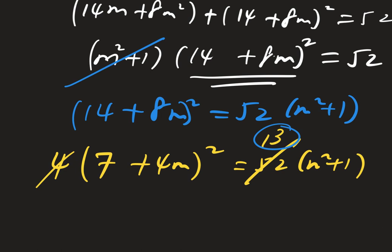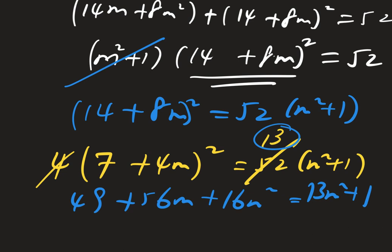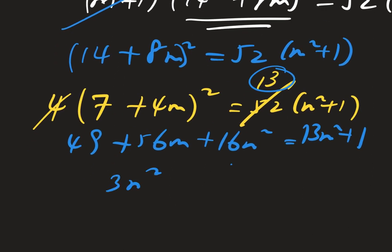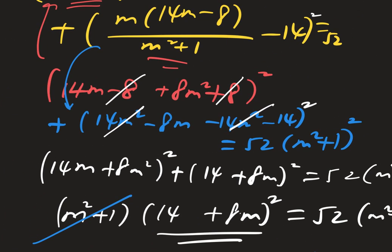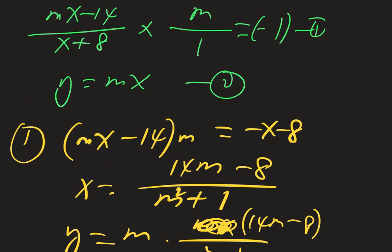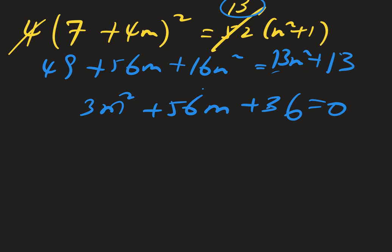Expanding: 49 + 56m + 16m² = 13(m² + 1) = 13m² + 13. So 3m² + 56m + 48 = 0. Look at how I solve — I don't brute-force or use a lot of memory. I use technique and strategy. Even while explaining a lot, I could solve this in about three minutes due to all the cancellations.